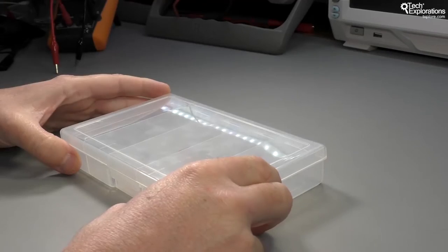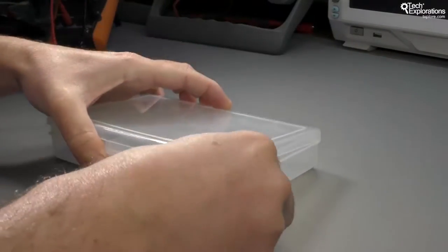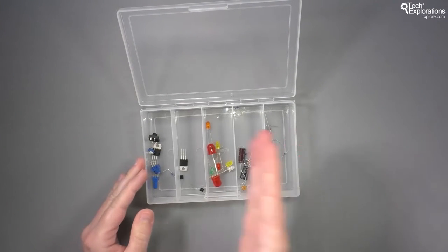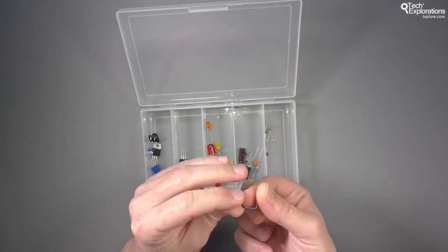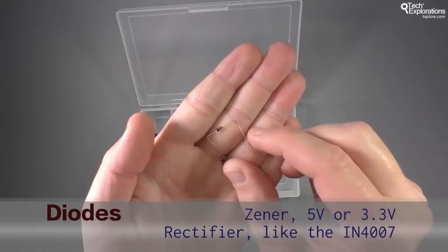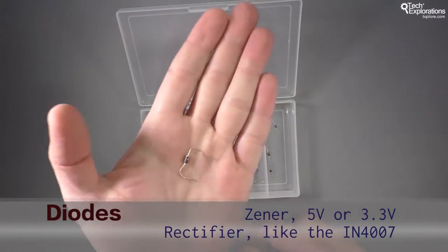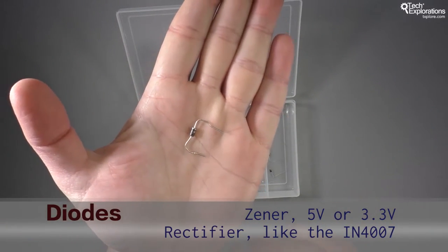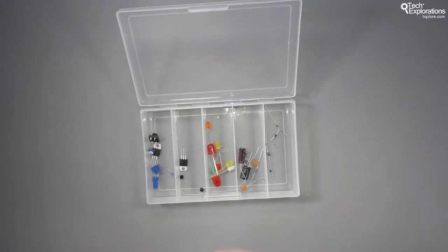This box pretty much contains everything that you will need. Let's have a look, starting from the right and going towards the left. We've got a few diodes here, so for example this one here is a zener diode. We'll be talking about diodes quite extensively. This one is just a common rectifier diode, nothing fancy. These are the kind of diodes that Arduino makers tend to use a lot, so you need to have a few of them lying around.